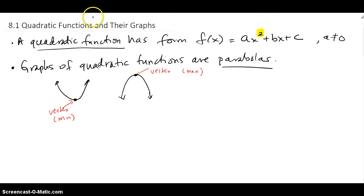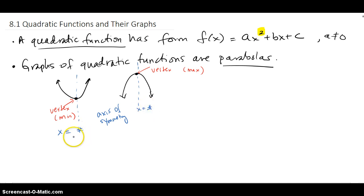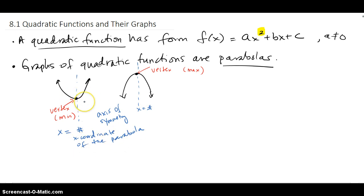There's also another feature — it's like a mirror that goes right through the vertex, and that's known as the axis of symmetry. The axis of symmetry is a vertical line that goes through the vertex of the parabola, so it's going to be x equals some number. And that number is always going to be the x-coordinate of the vertex, so whenever you need the equation for the axis of symmetry, all you need is the x-coordinate of the vertex.